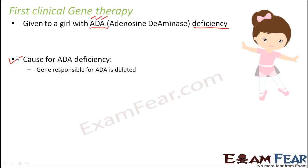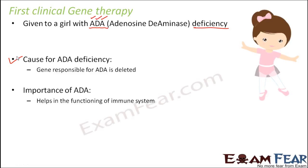ADA helps in the functioning of the immune system, and the immune system is like the shield of our body. It protects our body from small infections to big infections. If the immune system is very weak, even a small virus can become fatal and kill the person.